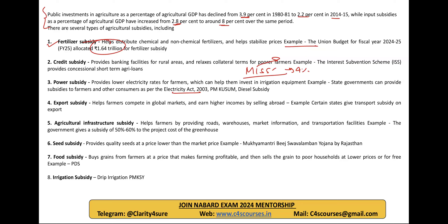Then power subsidies: the Electricity Act of 2003 allows states to give subsidy for power. You know about PM-KUSUM and diesel subsidies given in different parts of India. Then coming to export subsidy — in many states like Maharashtra, they give subsidy for transportation of agri-products for export. Agriculture infrastructure subsidy is also significant; schemes like Agriculture Infrastructure Fund, MIDH, and RKVY give 50 to 60% subsidy for infrastructure creation like greenhouses. Then seeds subsidy — states like Rajasthan implement schemes like Mukhyamantri Beej Swavalamban Yojana where subsidy on seeds is given.